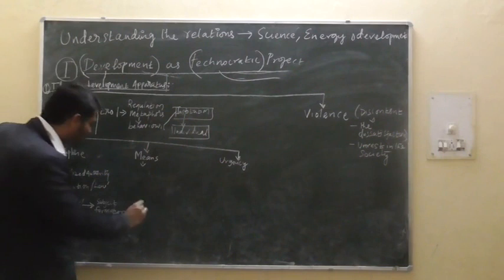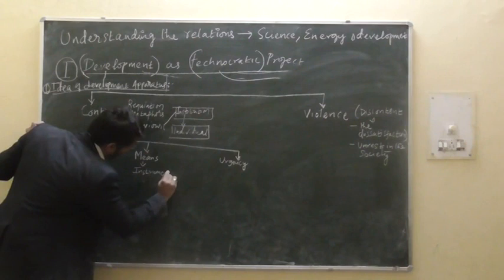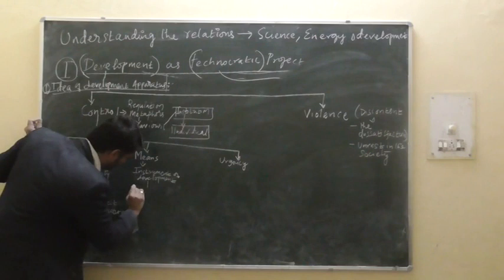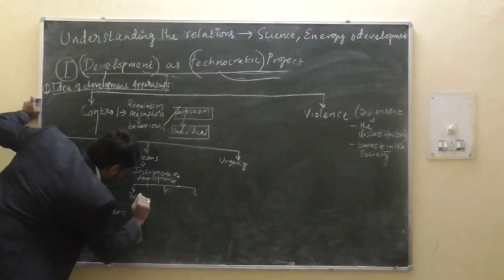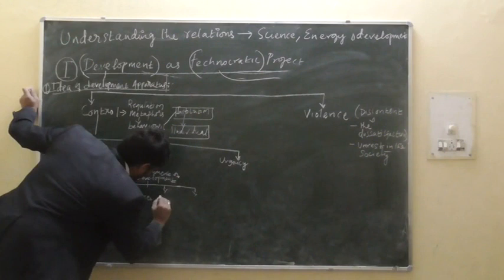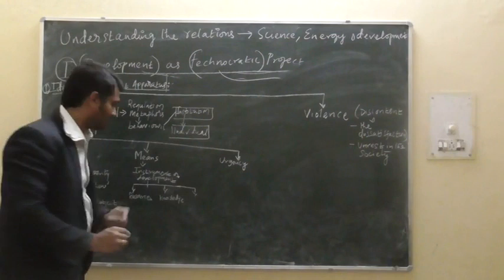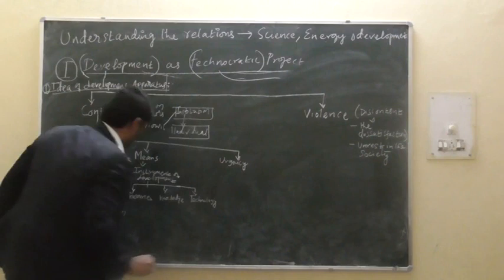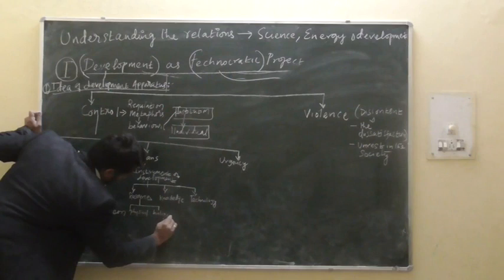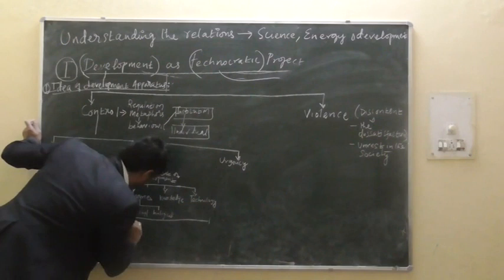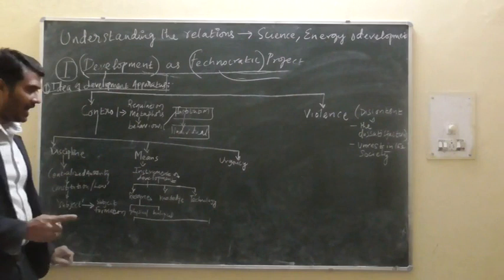The second metaphor — means — refers to the instrument of development. The instrument of development divides into three different things: one is about resources, the second is about knowledge, and the third is about technology. The resources here are physical and biological, and these become part of the means or instrument for development.